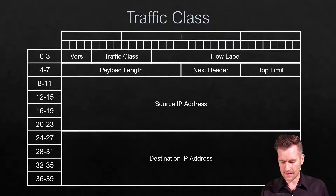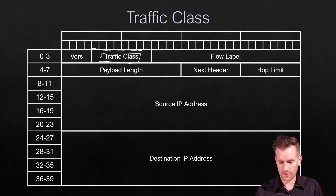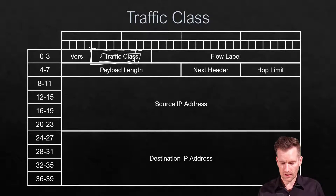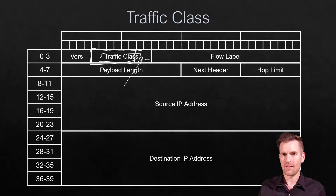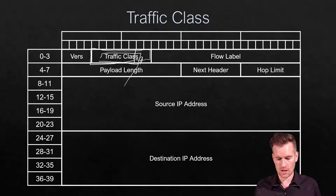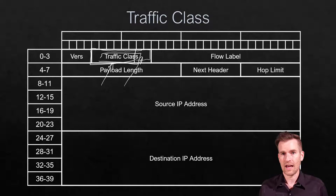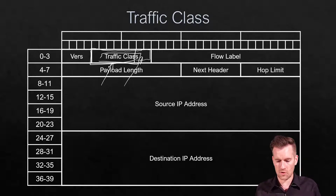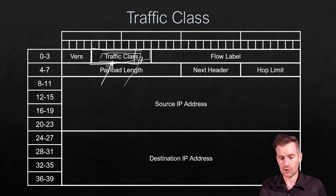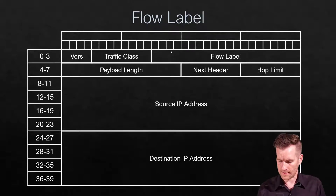The next field is the traffic class field, broken into two parts. The first six bits are the DSCP field — the differentiated services field — which identifies things like quality of service or management traffic, helping the router determine the priority of the packet. The remaining two bits are the ECN field, which signals congestion between layer three devices.